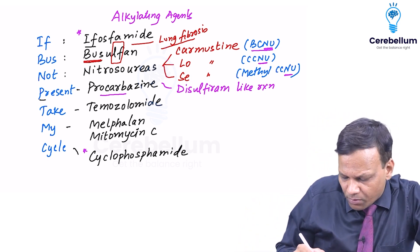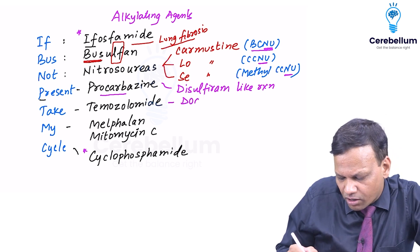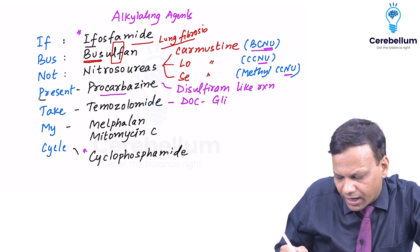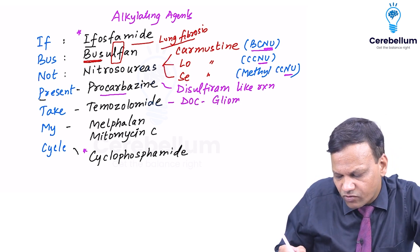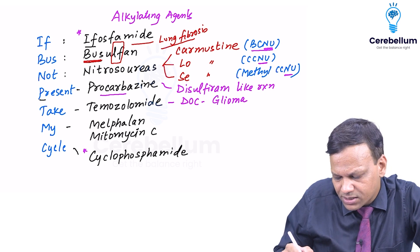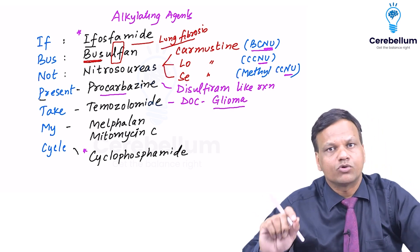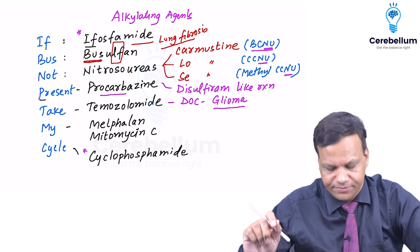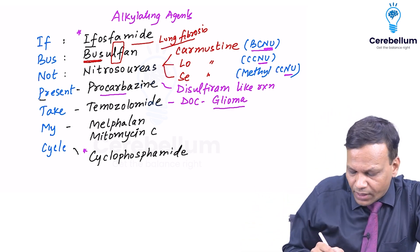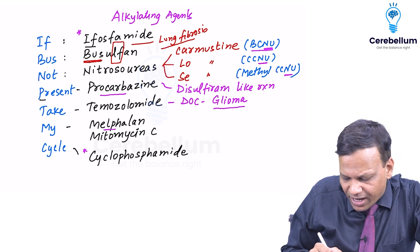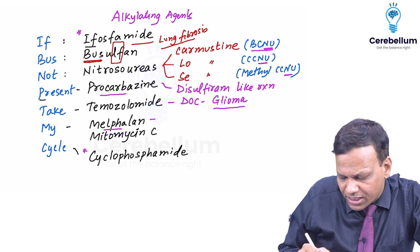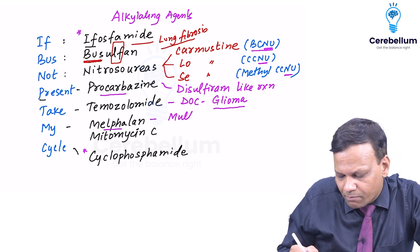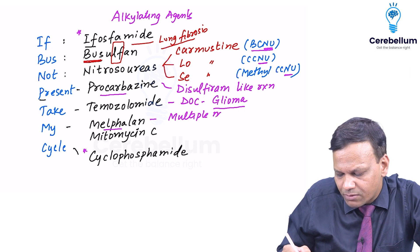Temozolomide is the drug of choice for brain tumors called gliomas. Melphalan is used in multiple myeloma.